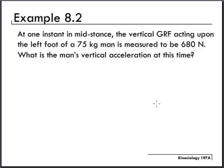The example problem we'll be walking through today is from lecture 8, example problem 8.2. It states that at one instant in mid stance, the vertical ground reaction force acting upon the left foot of a 75 kilogram man is measured to be 680 newtons. What is the man's vertical acceleration at this time?